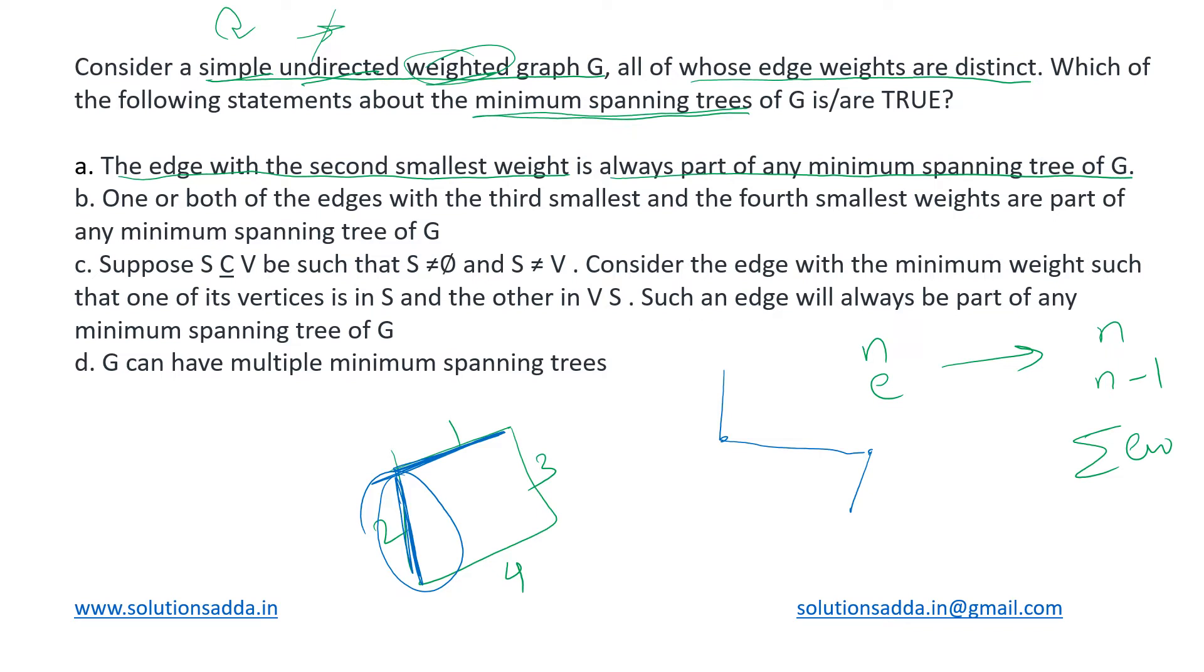Next one is saying that one or both of the edges with third smallest and fourth smallest weights are a part of any minimum spanning tree of graph G. So now for this, we will be assuming that the graph G has more than four vertices, then only it will have such edges existing.